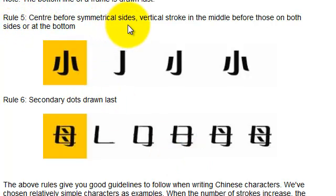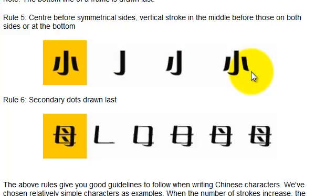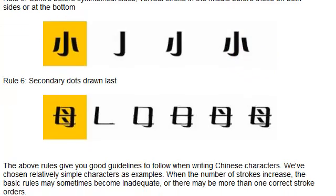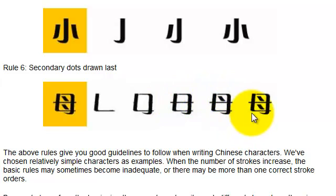Rule number five: center before symmetrical sides. When a character has symmetrical sides, the center stroke is drawn first, then the left and right sides. And finally, secondary dots are drawn last — in this character, the two dots are drawn at the very end. Stroke one, stroke two, stroke three, stroke four, and then the fifth stroke completes the dots.